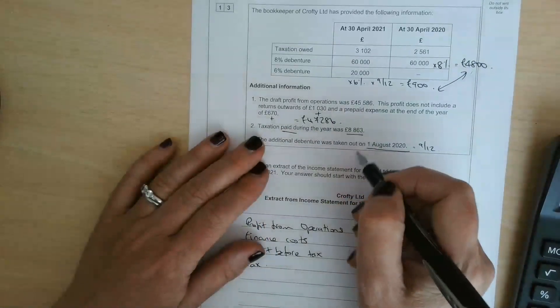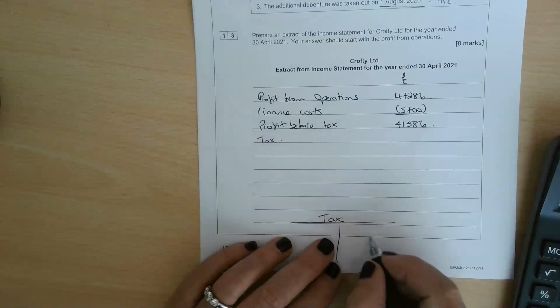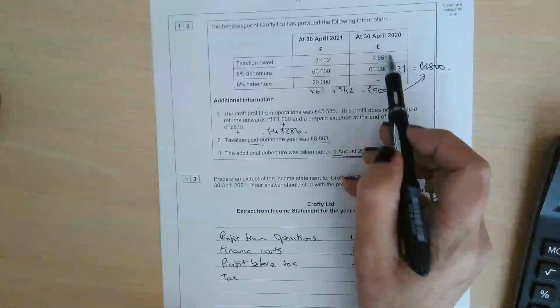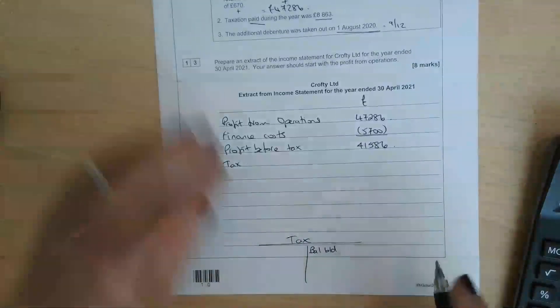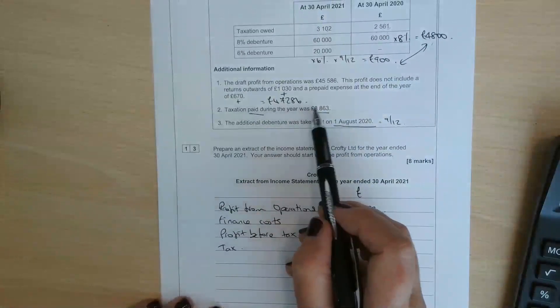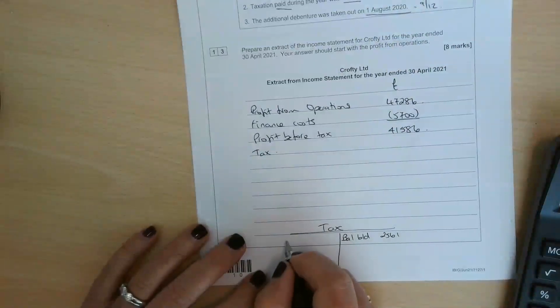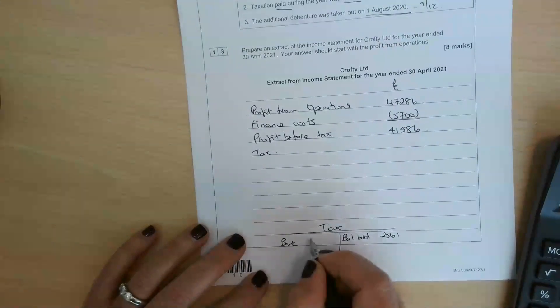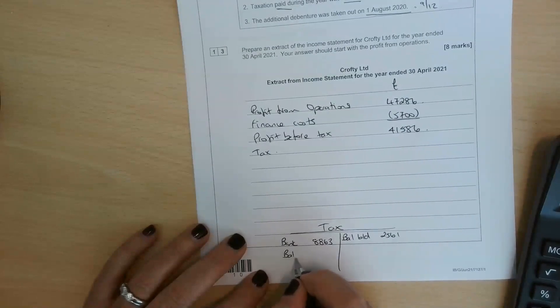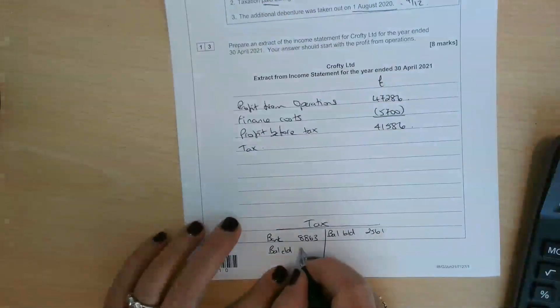The balance brought down is the amount we owed at the start of the year, £2,561. The amount we've paid during the year, £8,863, we would have credited the bank and debited the tax account. We've got a balance carried down of £3,102 we owed at the end of the year.